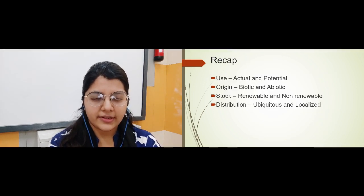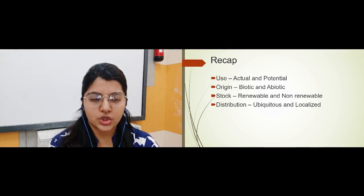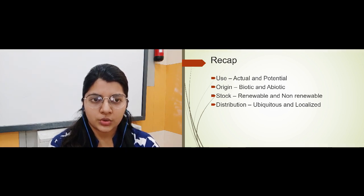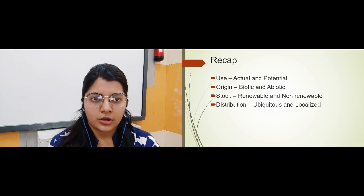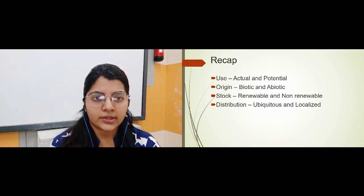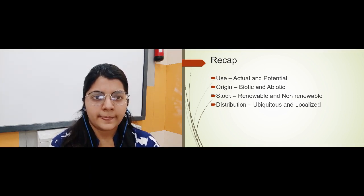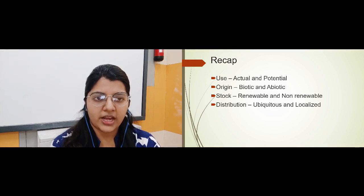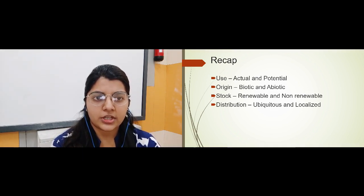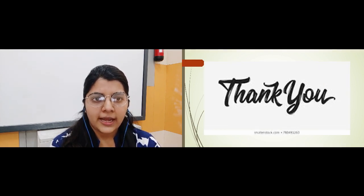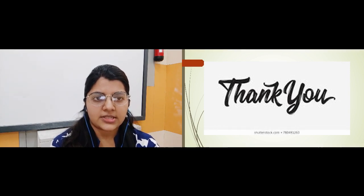Now a quick recap of all the resources we have studied. First, resources on the basis of use: actual resources and potential resources. Second, resources on the basis of origin: biotic and abiotic. Third, resources on the basis of stock: renewable and non-renewable resources. Fourth, resources on the basis of distribution: ubiquitous and localized resources. This was the detailed classification of resources — four parts with two types each. I hope you are clear with this. Thank you and have a nice day.